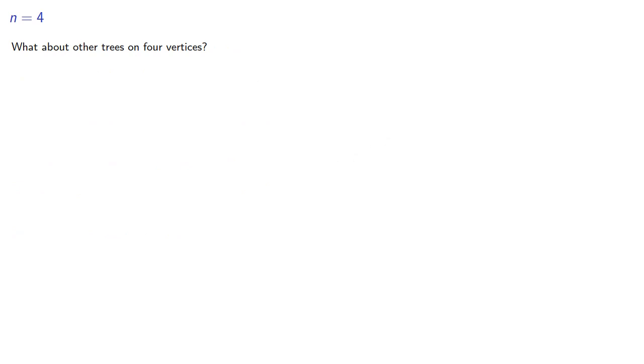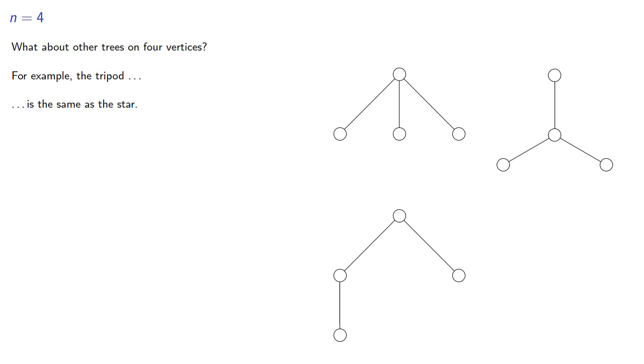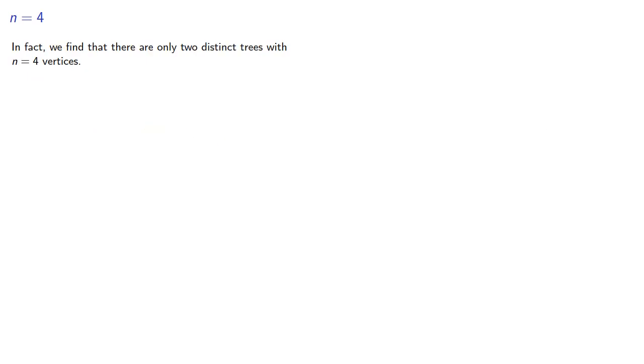What about other trees on 4 vertices? For example, the tripod, well, that's actually the same as the star. And a graph like this is the same as having all vertices in a line. In fact, we find there are only two distinct trees with n equals 4 vertices, the line and the star. The line has 4 factorial halves different labelings, and the star has 4 different labelings. And so there are 16 distinct labelings of trees with n equals 4 vertices.